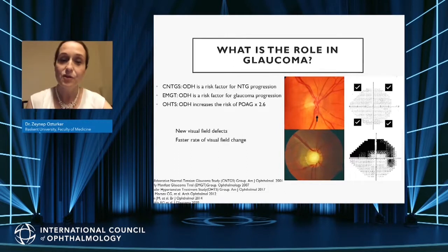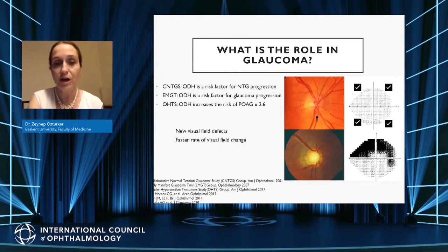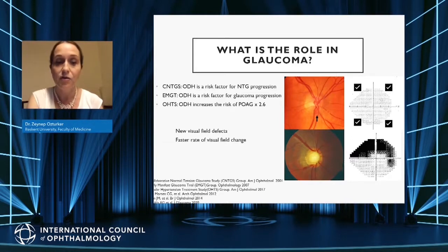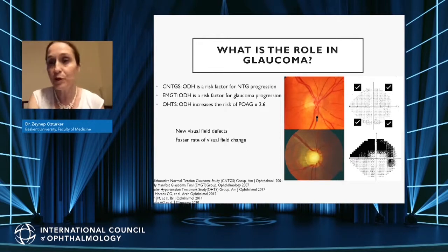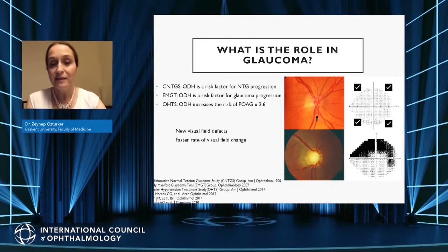Numerous other conditions can cause optic disc hemorrhage, potentially leading to glaucoma misdiagnosis, but these other conditions typically don't have the same features of glaucomatous neuropathy. Disc hemorrhages are rarely found in normal eyes but seen in approximately 6 to 7 percent of glaucoma eyes. The prevalence varies across glaucoma types — highest in normal tension glaucoma, followed by primary open-angle glaucoma and ocular hypertension, with least frequency in angle closure glaucoma. They can occur across the entire glaucoma spectrum from ocular hypertension to advanced disease. Major glaucoma studies have demonstrated that disc hemorrhage is an independent risk factor for glaucoma progression.